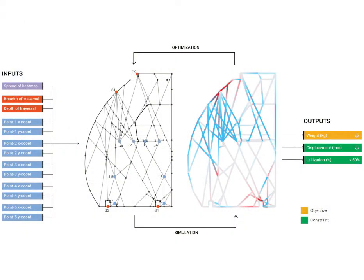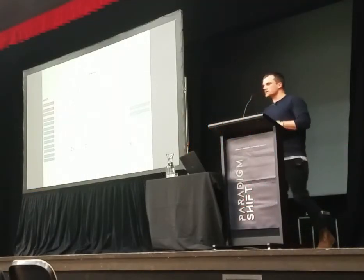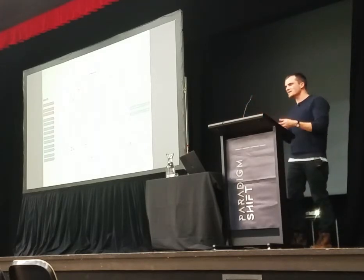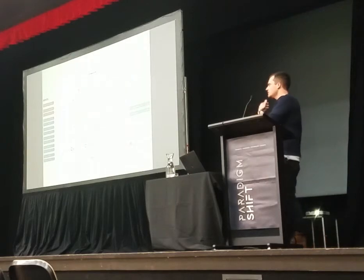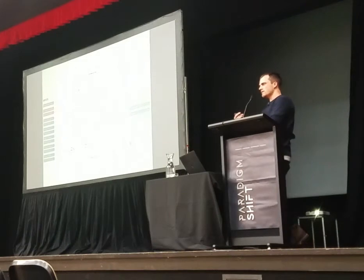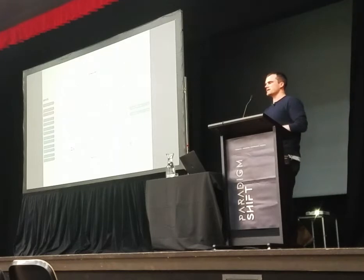Here's a description of our design models — the same species model with input parameters on the left side. There are 13 parameters driving each design iteration. Because we're working computationally on a structural problem, we can run each design automatically through structural simulation software. That structural simulation gives us back a series of metrics — it tells us about weight, and we tell the computer to minimize that number, making it as small as possible.